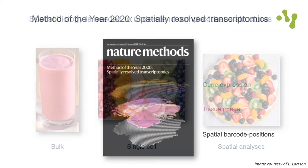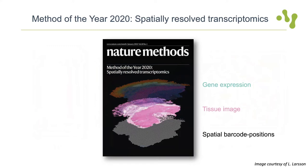This was highlighted when Nature Methods declared spatial transcriptomics as Method of the Year. For a method to be nominated, it has to fundamentally impact and dramatically advance the way scientists explore questions that are otherwise unanswerable. The maintenance of spatial context is crucial for understanding key aspects of cell biology, developmental biology, neurobiology, tumor biology, and much more.